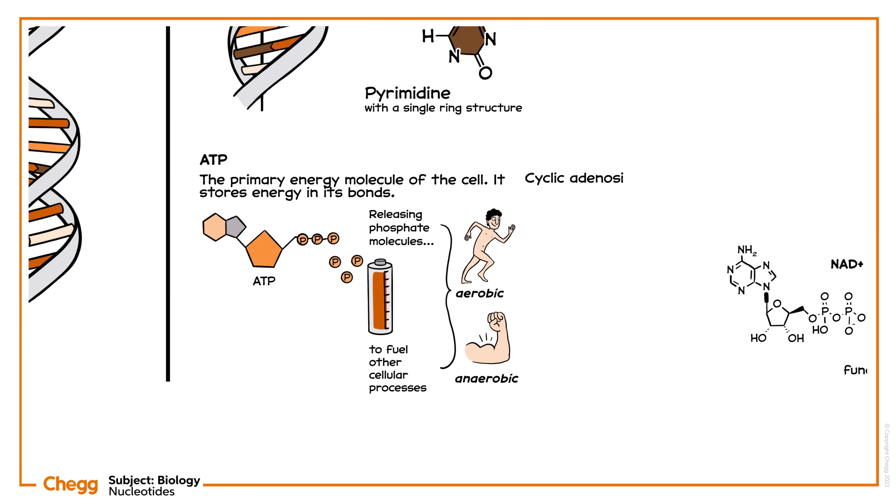Finally, cyclic adenosine monophosphate, or cAMP, is a nucleotide essential for transporting chemical signals and regulating metabolism. It's vital for carbohydrate and lipid metabolism.